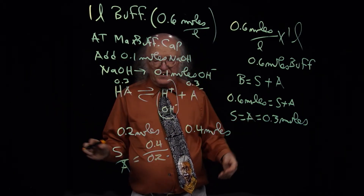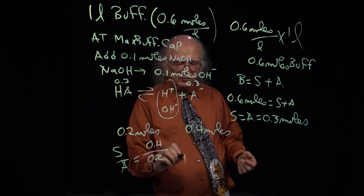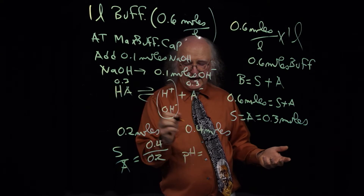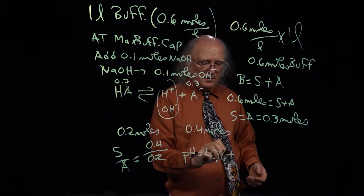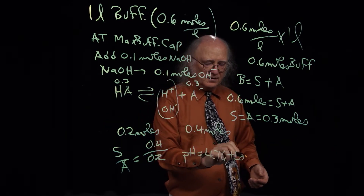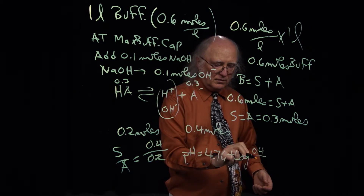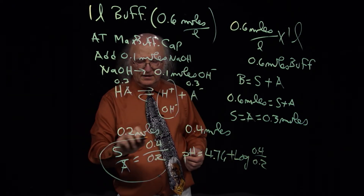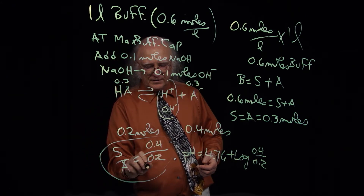If we were plugging that into Henderson-Hasselbalch and we knew the pKa — say we had acetic acid at 4.76 — the pH would be 4.76 plus the log of 0.4 over 0.2. But we were only asked for the ratio, which is exactly 2 to 1.